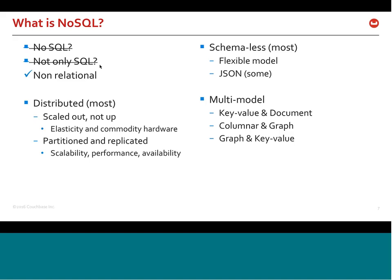Most NoSQL databases are schema-less, meaning you can store and retrieve data without specifying a schema beforehand. Some support JSON, including Couchbase; others support different data formats. In the last year, companies have moved from a single storage model to multi-model. Rather than a pure document, graph, or columnar database, you'll see different combinations of data models. In Couchbase's case, it is both a key-value and document NoSQL database.